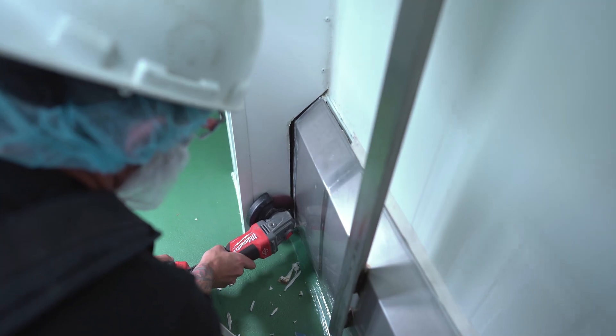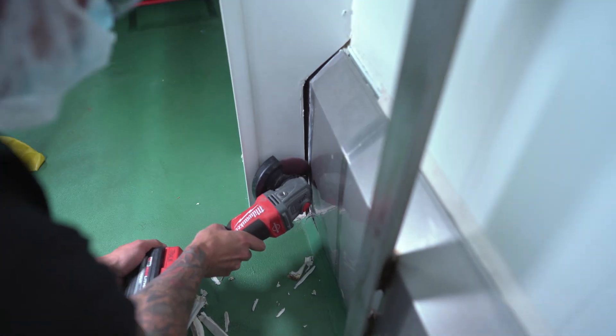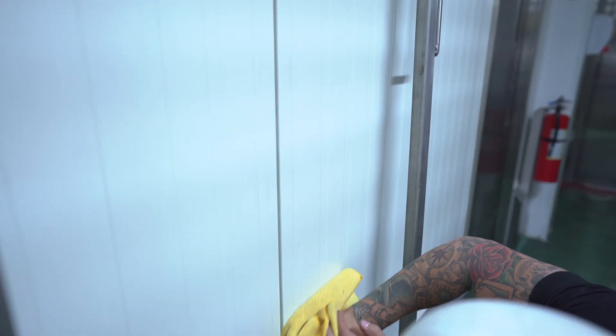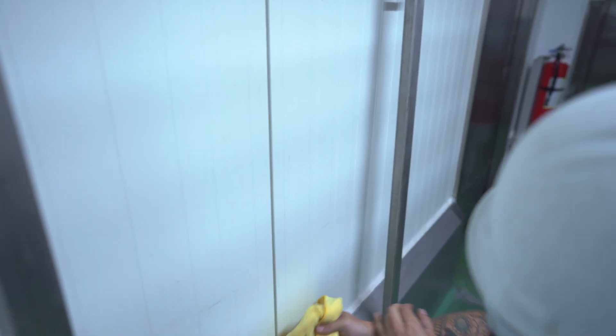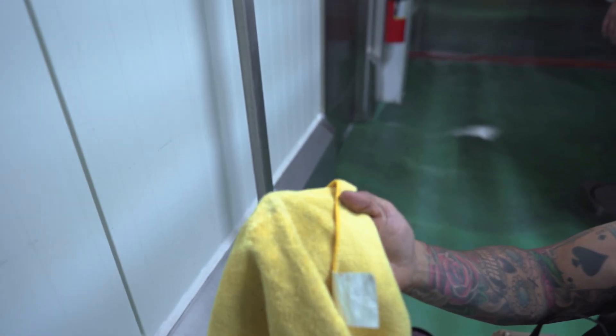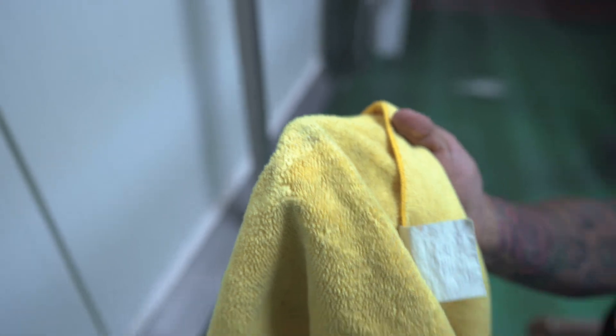For brand new panels, sand the surfaces with a Scotch-Brite pad. Clean the surfaces with a clean white cloth soaked with acetone until the cloth comes away clean and without any black oxidation or dirt.